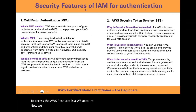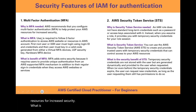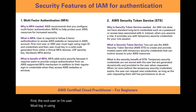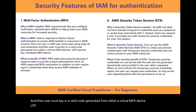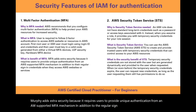We will quickly cover some security features of Identity and Access Management for authentication. First, multi-factor authentication. Why is MFA needed? AWS recommends that you configure multi-factor authentication to help protect your AWS resources for increased security. The user is required to follow a two-factor authentication to access the AWS website or resources. First, the root user or IAM user must log in using login ID and credentials, and then the user must key in a valid code generated from either a virtual MFA device, UTF security key, or hardware MFA device. MFA adds extra security because it requires users to provide unique authentication from an AWS-supported MFA mechanism in addition to their regular sign-in credentials when they access AWS websites or services.